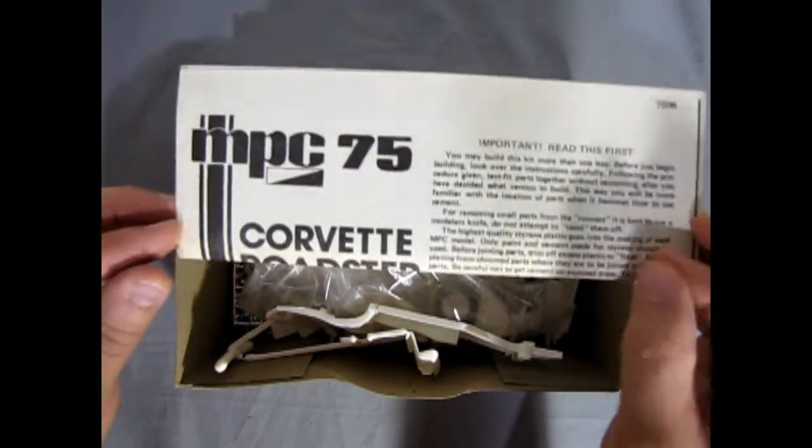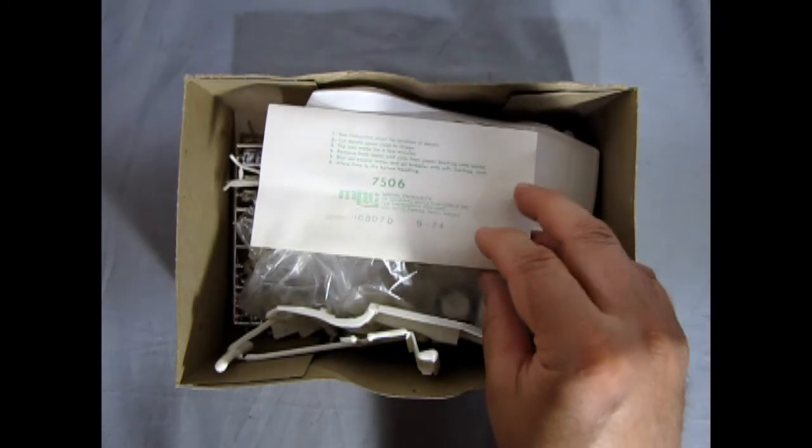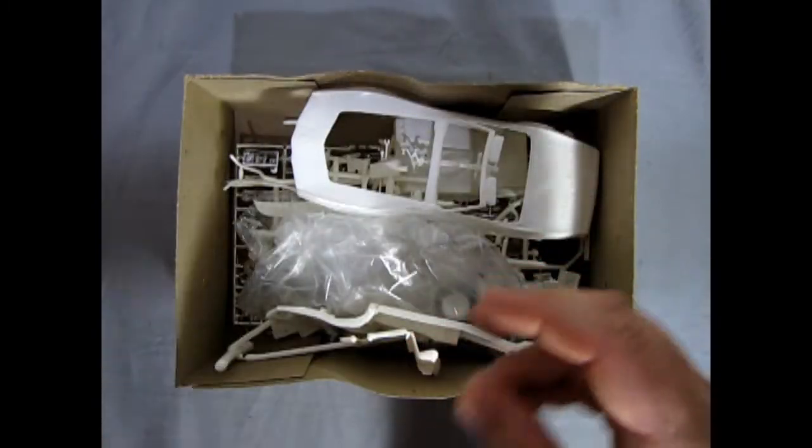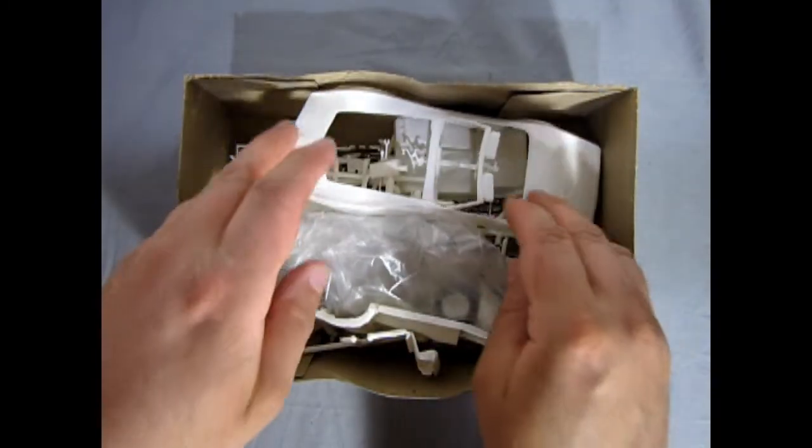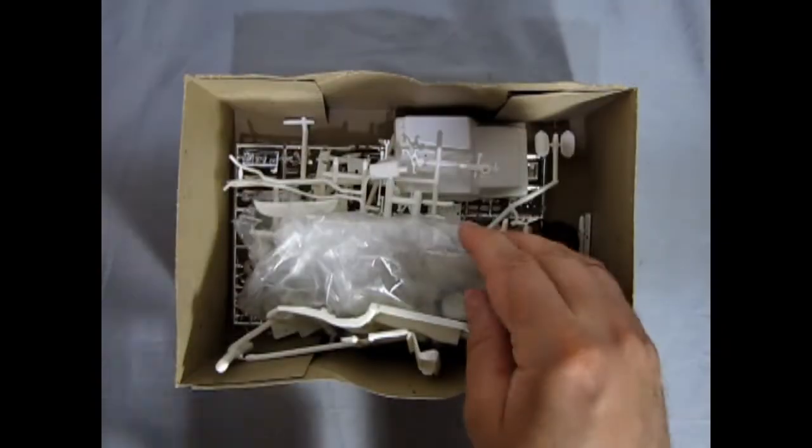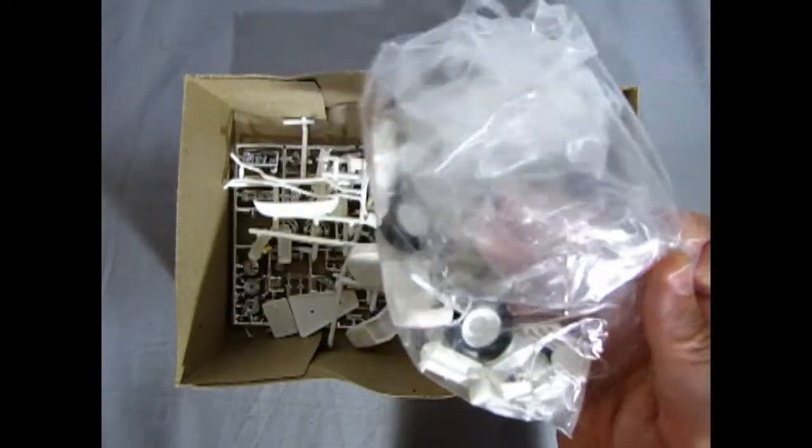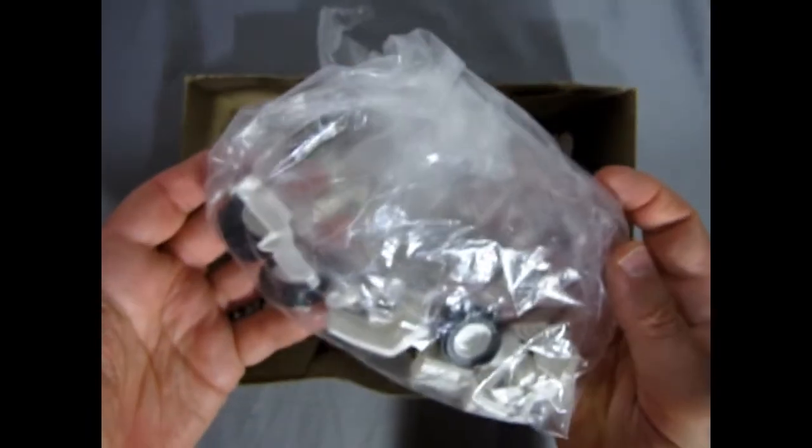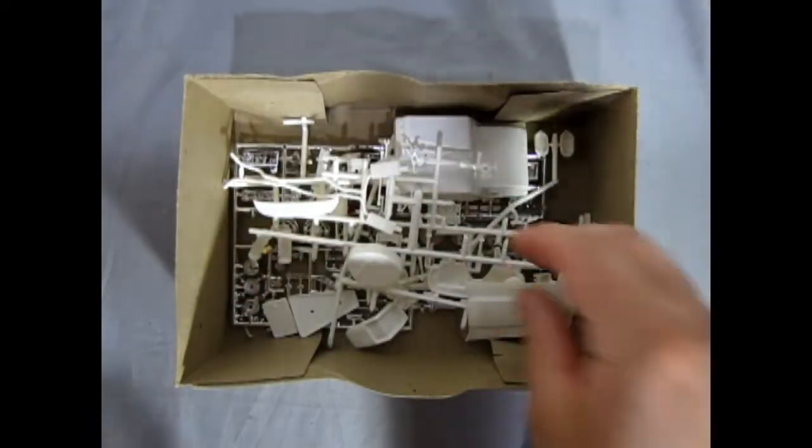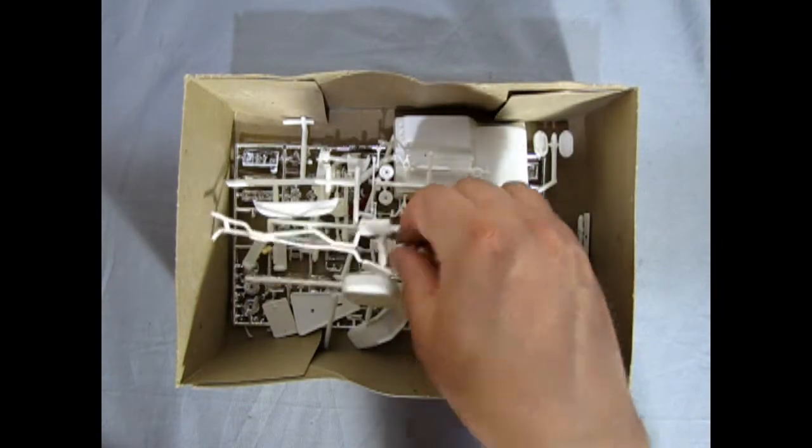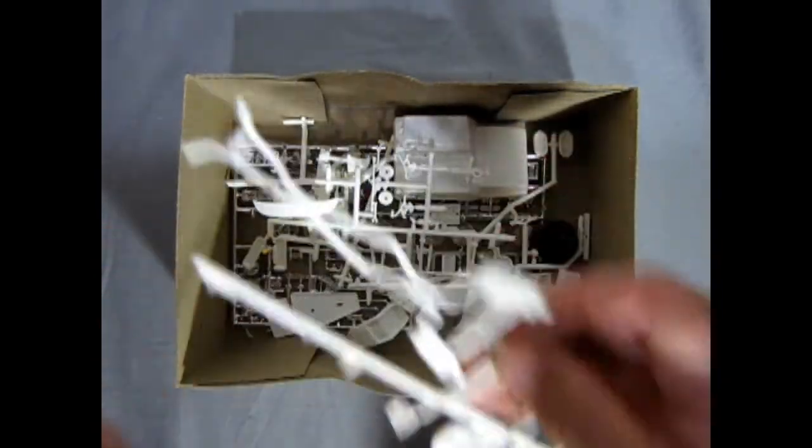Now here we have our instruction sheet that came with the kit, as well as our decal sheet which we'll take a look at toward the end. Then we've got all our white components like the body and the chassis and front nose. This is an old kit, so somebody obviously had taken a look at it before in the past. And then here we have all our other components.